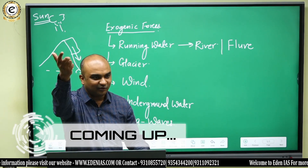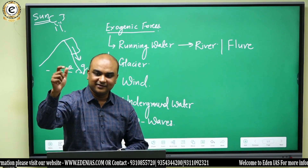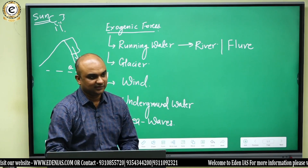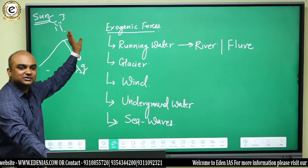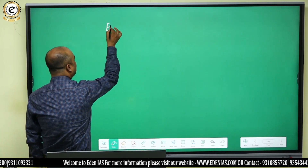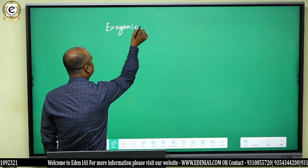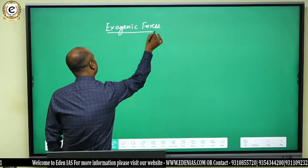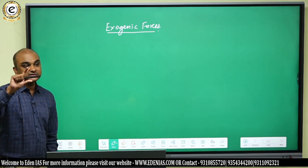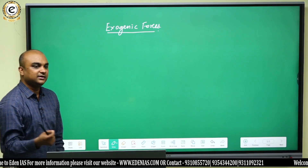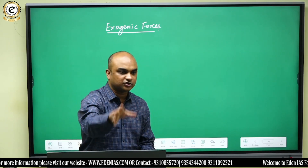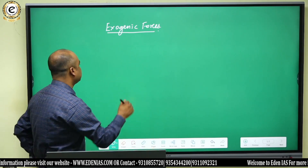Snowfall comes from clouds, clouds from condensation, condensation from evaporation, and evaporation is caused by the sun. When we talk about exogenic or exogenetic forces — if endogenetic forces originate in the earth's interior, exogenetic forces originate in the earth's atmosphere. The job of exogenic forces is to destroy landforms.